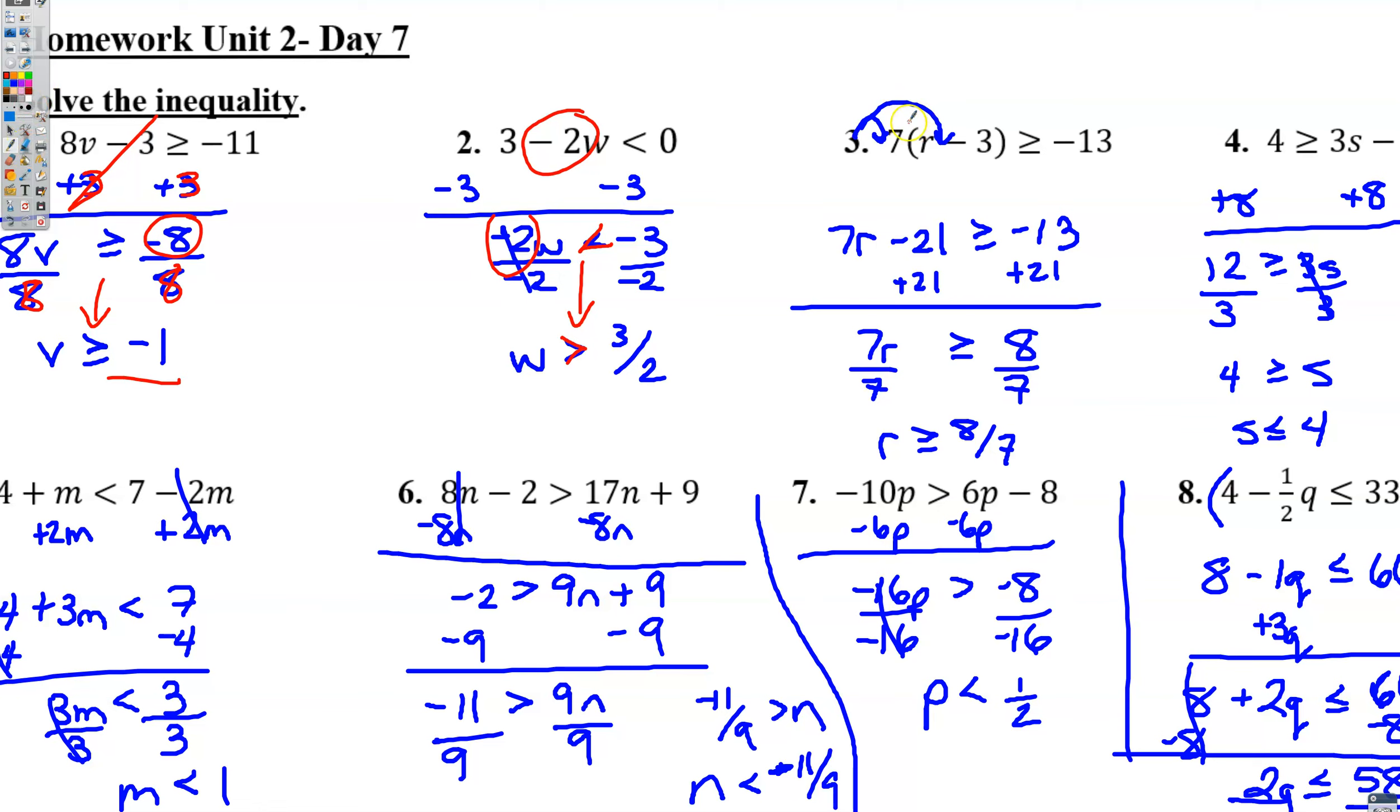All right. The first step on number three is to distribute. The arrows got a little off, sorry about that. When you distribute, 7 times r is 7r, 7 times negative 3 is a negative 21.